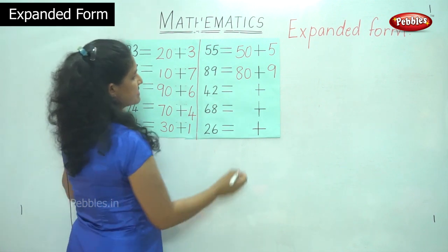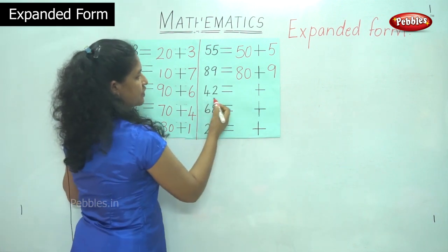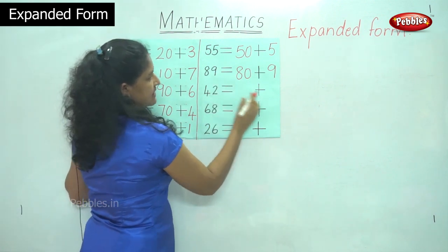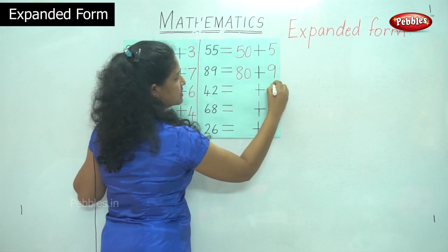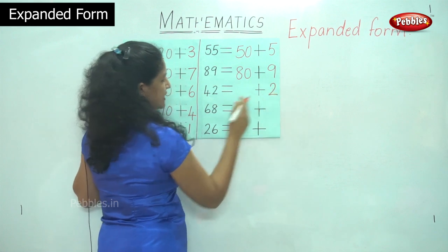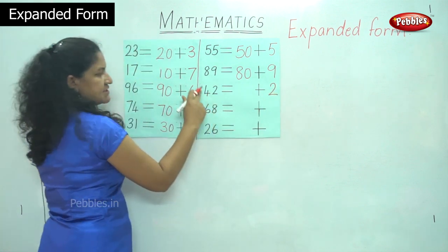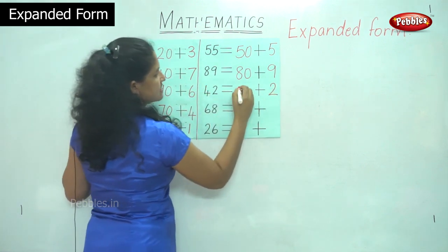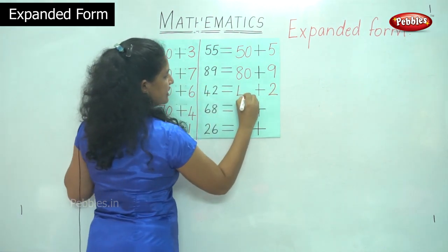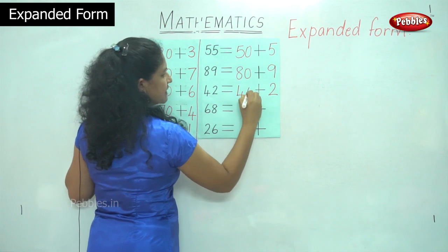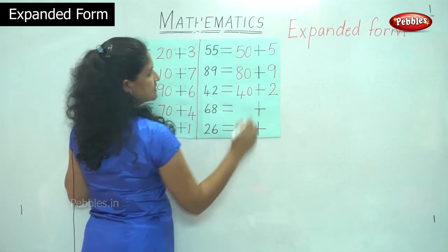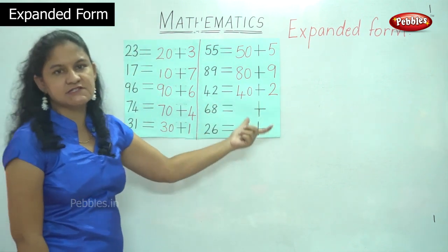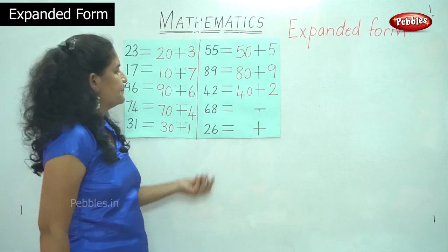The next number is 42. In the ones place I have number 2 and in the tens place I have 4 tens, which is 40. So 42 is equal to 40 plus 2.